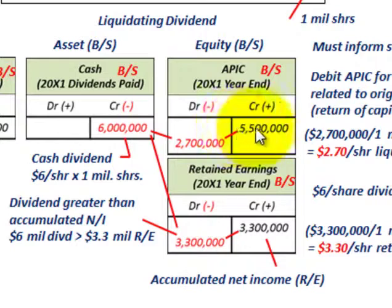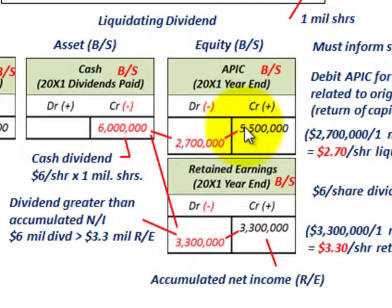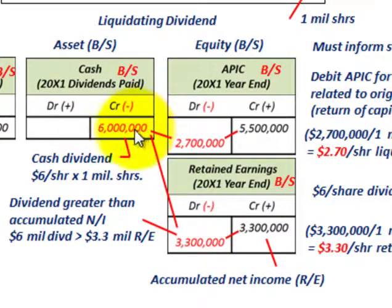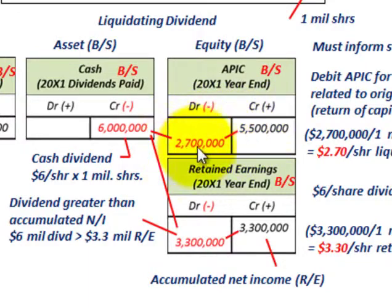At the beginning of the year 20X1, there was $5,500,000 sitting in additional paid-in capital. We need to come up with the remaining balance of the $6 million cash dividend after the $3.3 million retained earnings portion, which leaves $2,700,000. So we debit — or reduce — additional paid-in capital by $2,700,000.